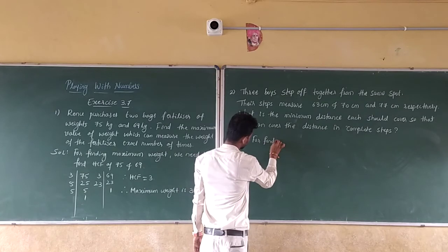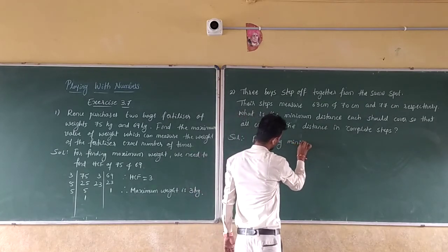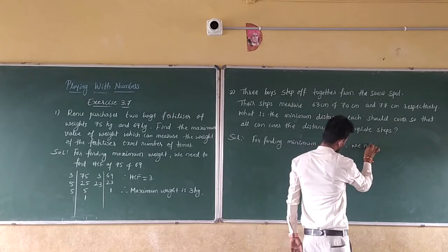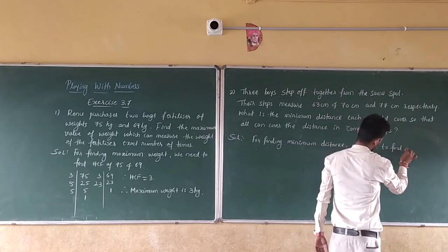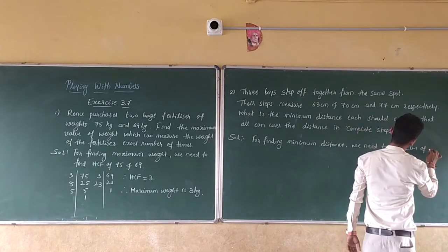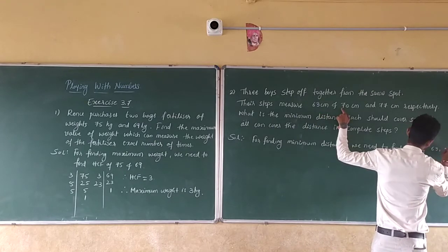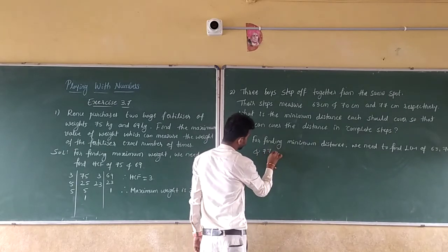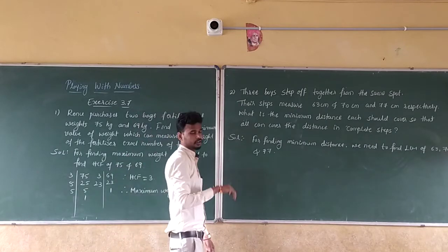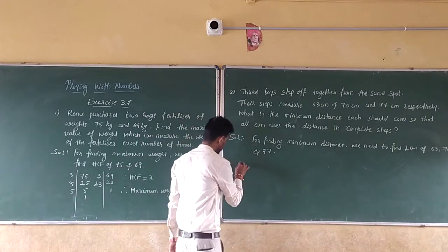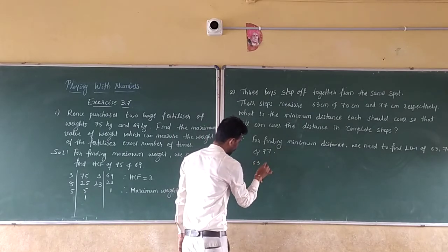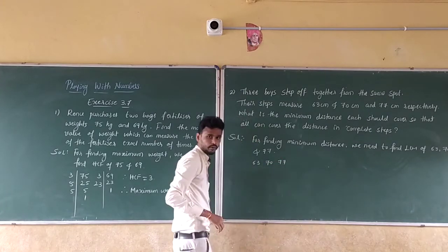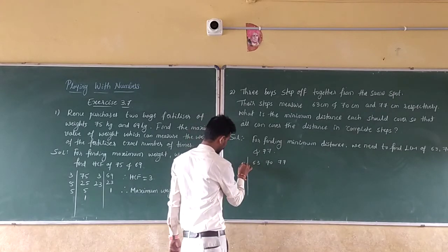For finding minimum distance, we need to find LCM of 63, 70, and 77. So now divide those. Write 63, 70, 77. Divide by 3: 3 divides 63 to get 21, keep 70 as is, keep 77 as is. Next, divide by 7: 7 divides 21 to get 3, 70 to get 10, and 77 to get 11.